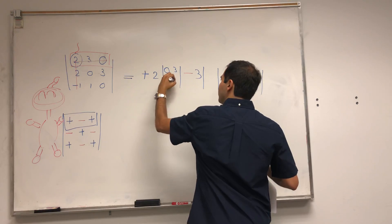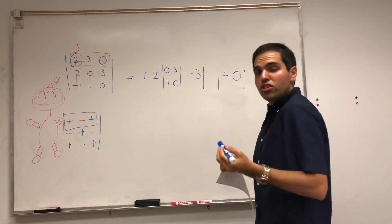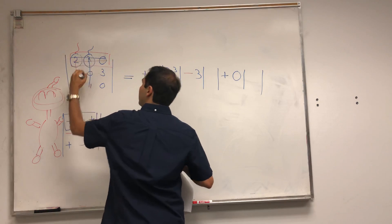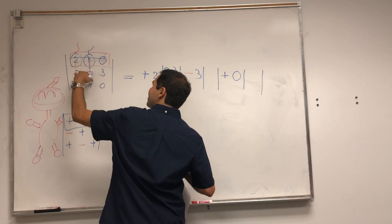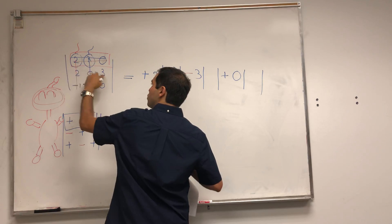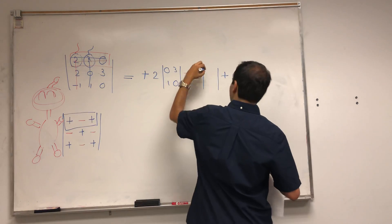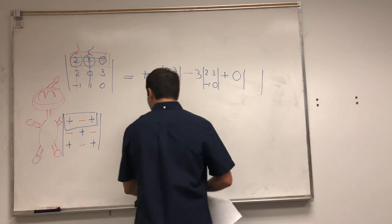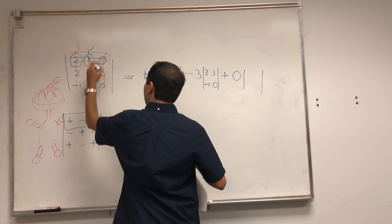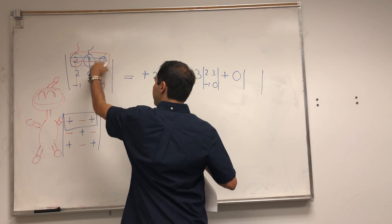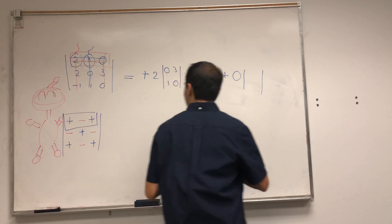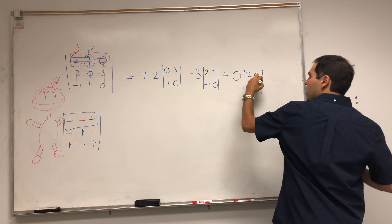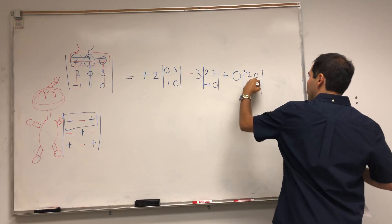So zero, three, one, zero. And then just continue. Place a bomb in the second entry. It destroys everything in the same row and column. And you're left with two, three, minus one, zero. And lastly, zero, you place a bomb here. And it destroys everything here. And you have determinant of two, zero, minus one, one. Sorry, two, zero, minus one, one.